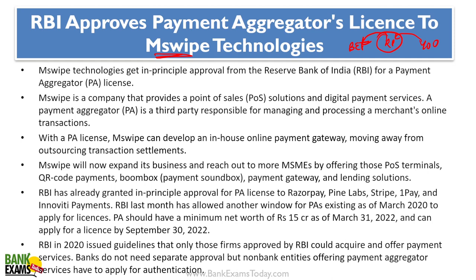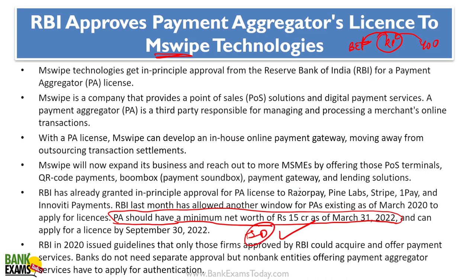MSwipe technology recently got the payment aggregator license. RBI has a guideline that the payment aggregator should have a minimum net worth of 15 crore as on 31st March 2022. That minimum net worth of 15 crore requirement is important. Companies like Razorpay, PineLabs, Stripe, OnePay, and Innovity already got the licenses. Now MSwipe has received the license recently.